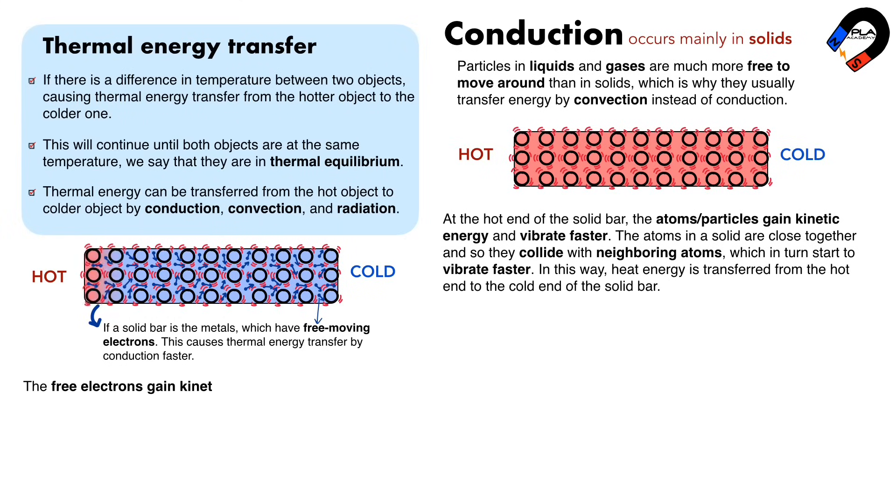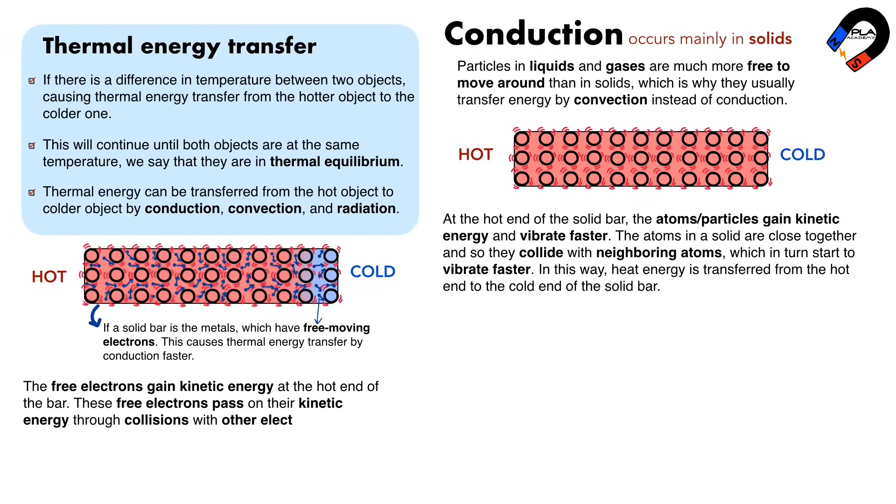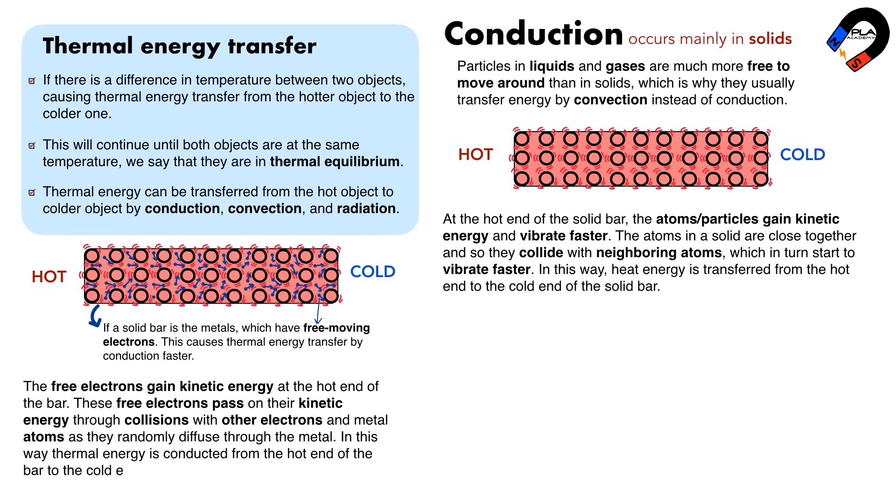This is because free electrons gain kinetic energy at the hot end of the bar. These free electrons pass on their kinetic energy through collisions with other electrons and metal atoms as they randomly diffuse through the metal. In this way, thermal energy is conducted from the hot end of the bar to the cold end.